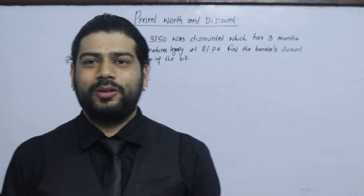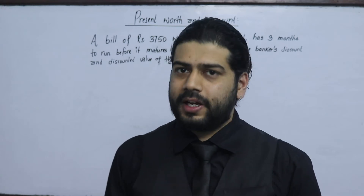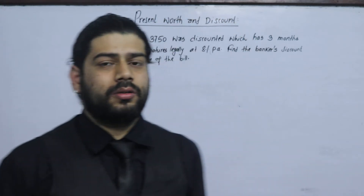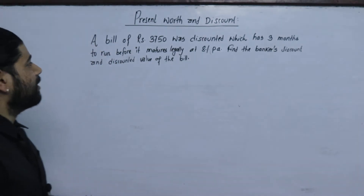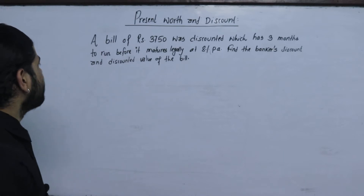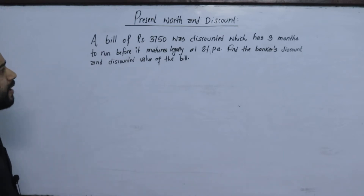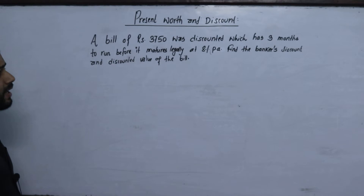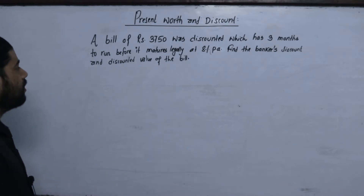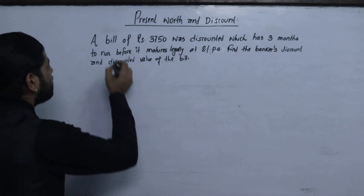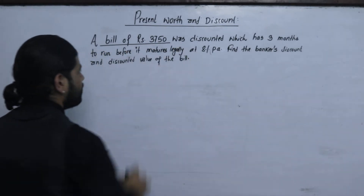Namaskar. I am going to talk about business mathematics problem solving. A bill of Rs.3,750 was discounted which has 3 months to run before it matures legally at 8% per annum. Find the banker's discount and discounted value of the bill.